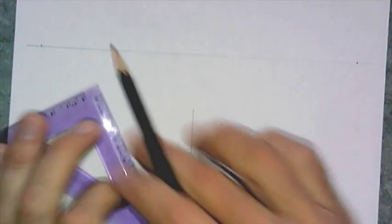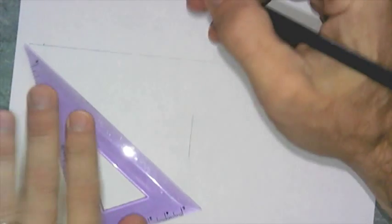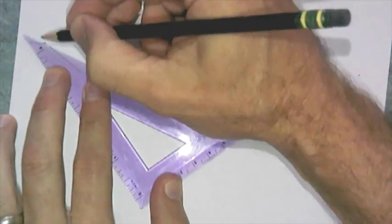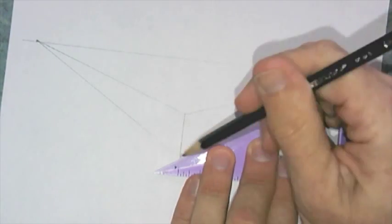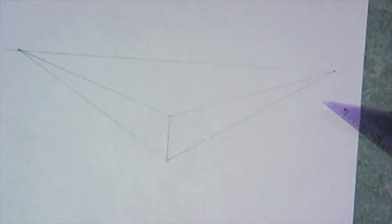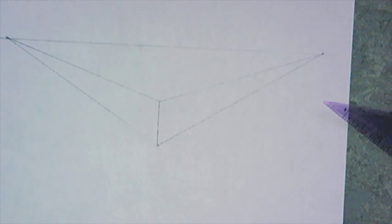So, here are our vanishing lines. Now, I have what looks like a large V.